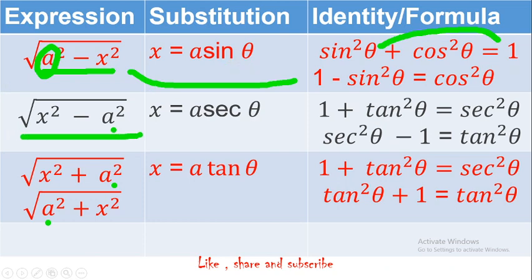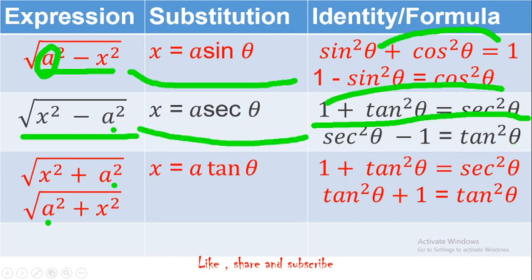Now for x² − a², compare again. Use the formula 1 + tan²θ = sec²θ. Send 1 to the other side: sec²θ − 1 = tan²θ. It is something similar — nothing else. In place of 'a' just put the appropriate value. So the substitution for x² − a² is x = a secθ.